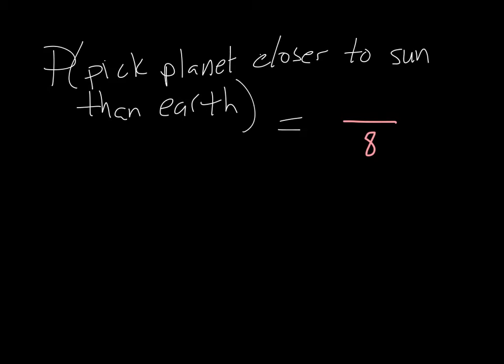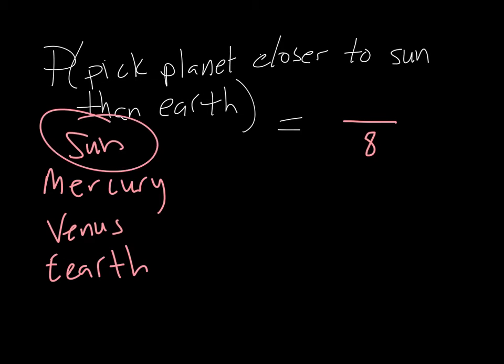So eight planets as a possible outcome. How many planets would be considered a favorable outcome? Well, how many planets are closer to the sun? Well, there's Mercury, and there's Venus, and then comes Earth. And the sun's right here. Big ball of gas.